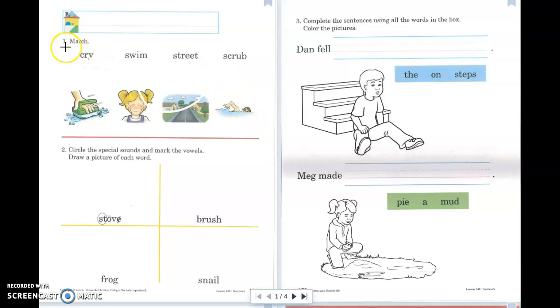So at the top, at number one, what we need to do is we need to read the words that they've given us, and then match the word to the corresponding picture.